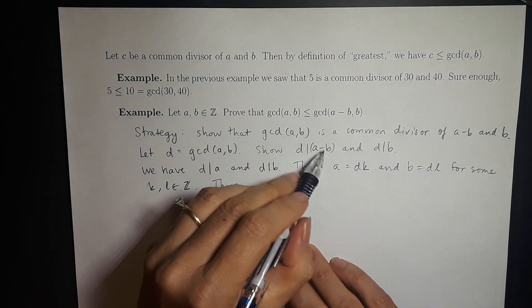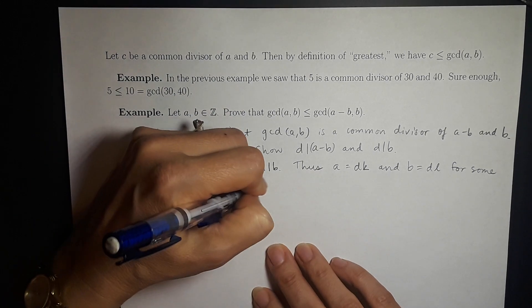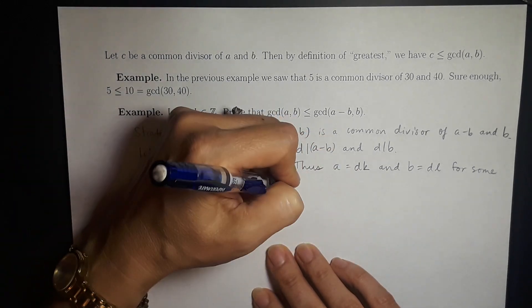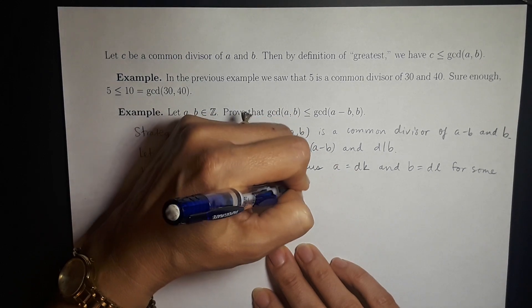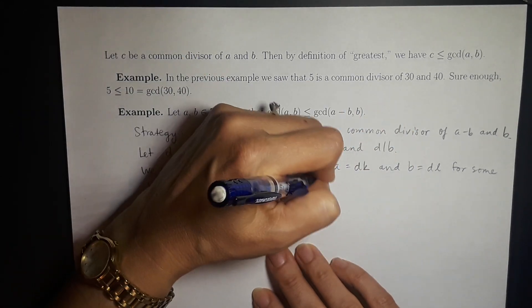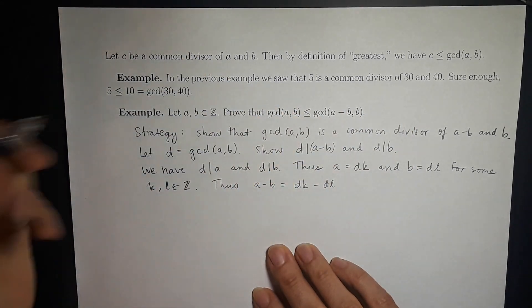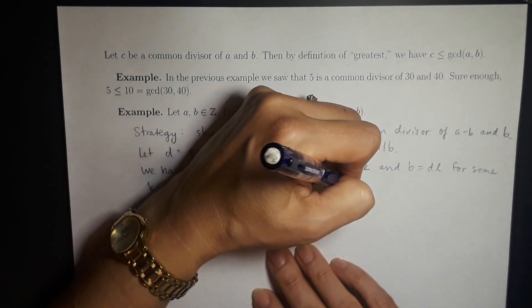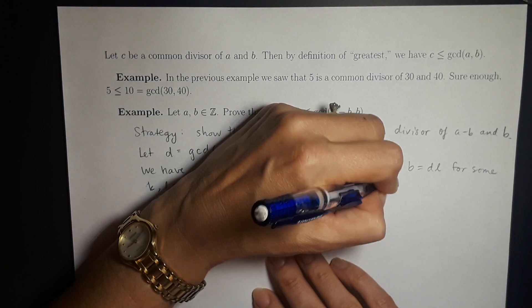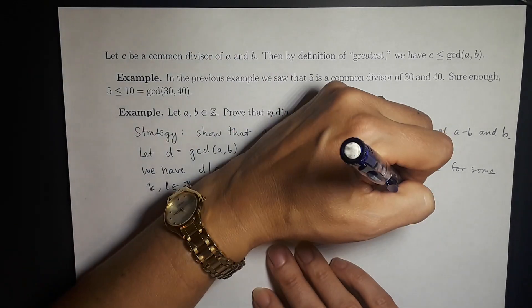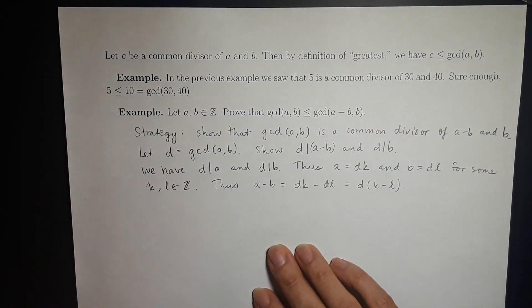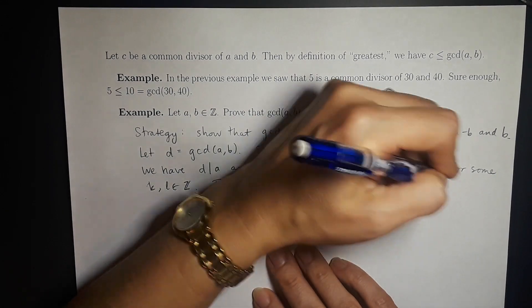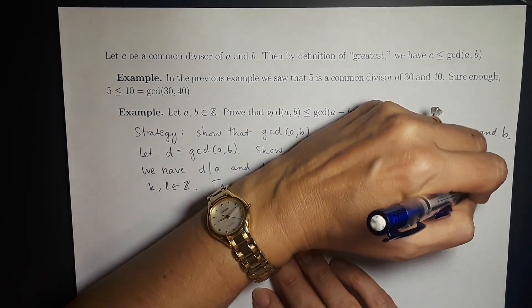Thus we work on a minus b. By substitution, a minus b equals Dk minus Dl. Since we want to show D divides a minus b, we factor out D to get D times (k minus l), and since k minus l is an integer, we have that D divides a minus b.